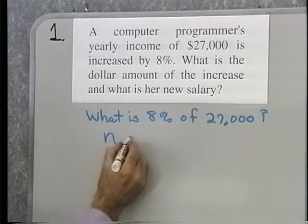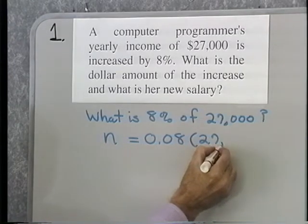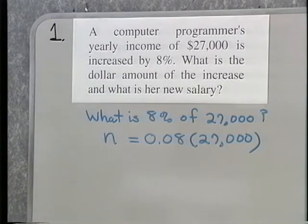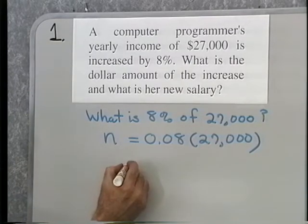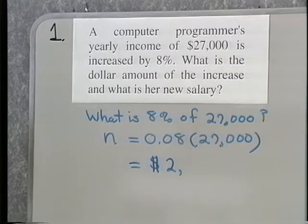So we translate N equals 0.08 times 27,000. Now when I do that, I multiply 0.08 times 27,000. I end up with a dollar amount of $2,160.